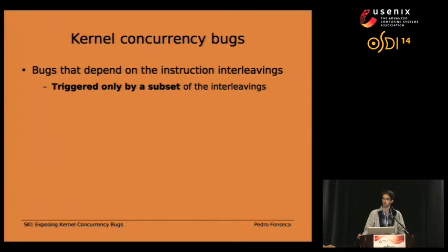Concurrency bugs are well known for being hard for developers. The reason for this is that concurrency bugs depend on the interleaving of instructions. In practice, it has been shown that many concurrency bugs are only triggered on a very small subset of interleavings. The kernel is no exception to this, and there are plenty of kernel concurrency bugs.